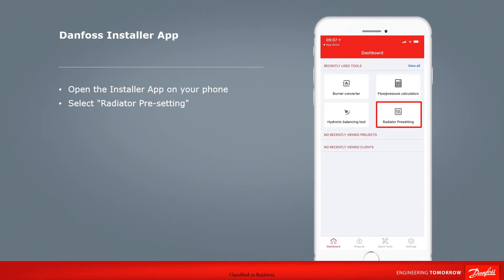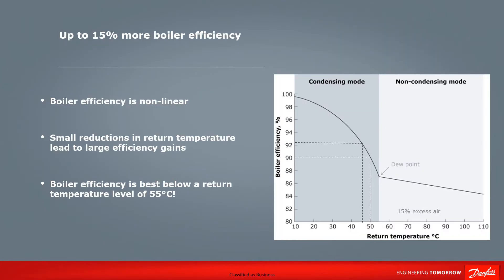With the Installer app open, please select radiator pre-setting to begin. Before we continue with the app, it's worth highlighting that boiler efficiency is non-linear. Small reductions in the return temperature can lead to large gains in efficiency. As you can see on the graph, modern boilers begin to condense with a return temperature of 55 degrees, giving an efficiency of around 86 to 88 percent. By reducing the return temperature by just five degrees, the efficiency increases to around 90 percent.